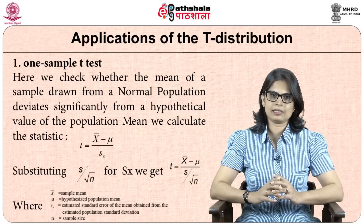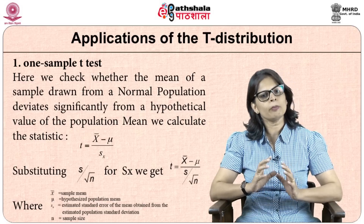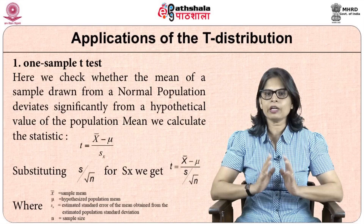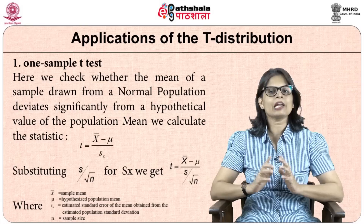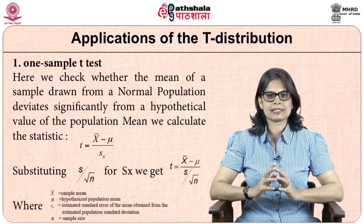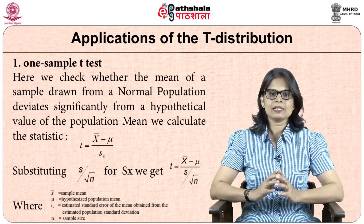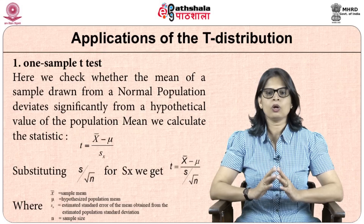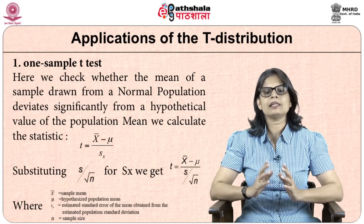For the one-sample t-test, we check whether the mean of a sample drawn from a normal population deviates significantly from the hypothetical value of the population mean. The statistic is t equals x-bar minus mu divided by S-x. Here x-bar is the sample mean, mu is the hypothesized population mean, S-x is the estimated standard error of the mean, and n is the sample size.